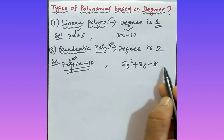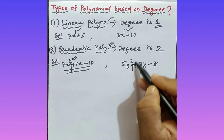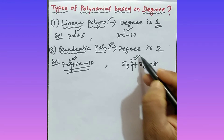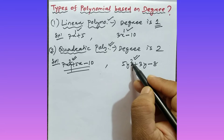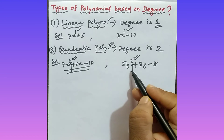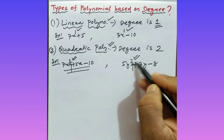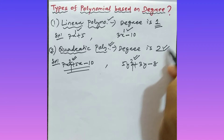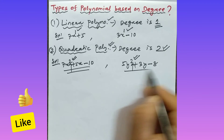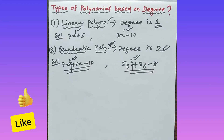Similarly, 5y squared plus 3y minus 8 — the degree here is 2, which is the highest power of the variable. As the degree is 2, this polynomial is also called as quadratic polynomial.